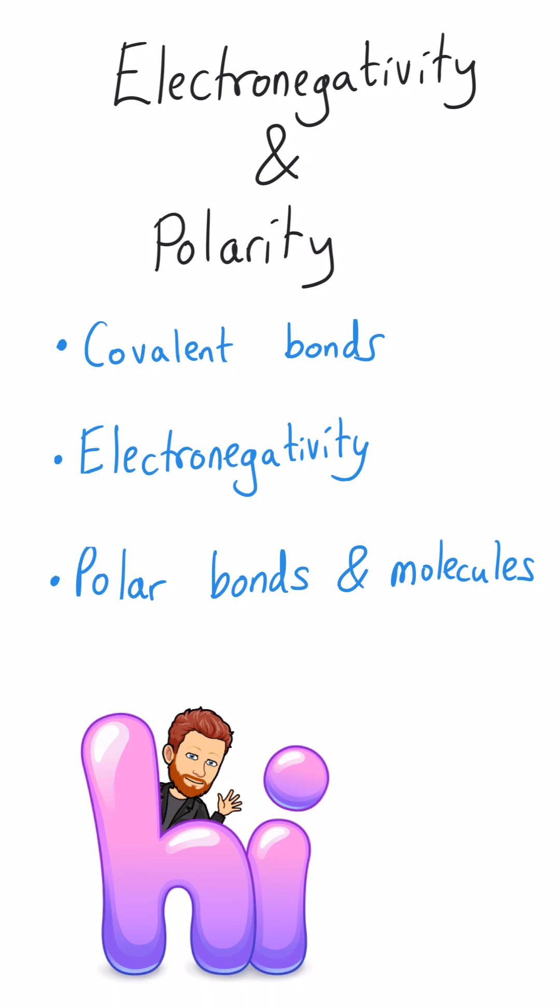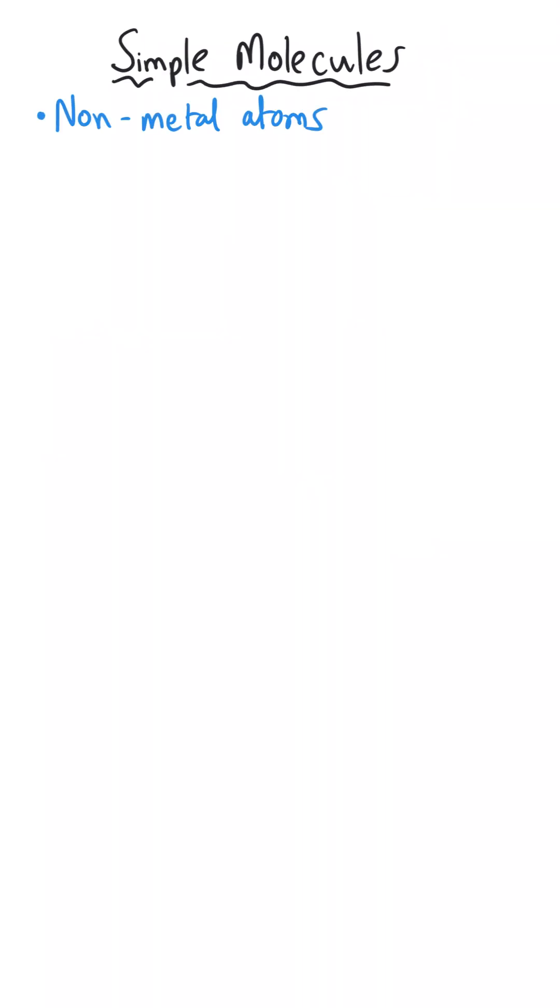Hello everybody and welcome to this chemistry video about electronegativity and polarity. In this video we'll be taking a look at covalent bonds and their nature, then we're going to look at electronegativity, both in terms of what that actually is and what patterns there are in electronegativity in the periodic table, and then we're going to take a look at how polarity can lead to polar bonds and polar molecules.